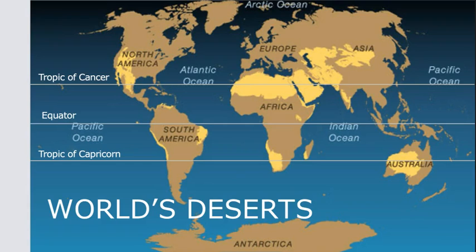Warm deserts occur on Earth according to geographic location and circulation of Earth's atmosphere. Warm deserts are distributed reasonably close to the equator, where the angle of incidence of the sun's energy is low. The angle of incidence is the angle between the Earth's surface and incoming energy from the sun. When the sun is directly overhead, the angle of incidence is zero, which happens at latitudes near the equator.